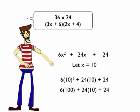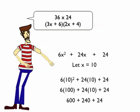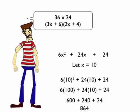So 6 times 10 squared plus 24 times 10 plus 24, so I just put the 10 back where the x was. 10 squared is 100, so I get 600 plus 240 plus 24, and of course 36 times 24 is, for sure, 864.